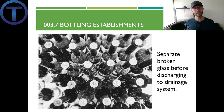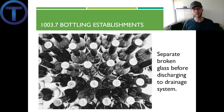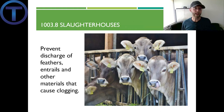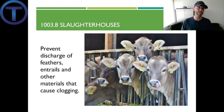Section 1003.7 talks about bottling establishments — broken glass would be a bad thing in the drains, so we have to separate broken glass before discharging into the drainage system. Section 1003.8 talks about slaughterhouses — very similar, where we'd want to prevent the discharge of feathers, entrails, or whatever else comes from harvested animals from clogging the drains. Some kind of interceptor would be required there.